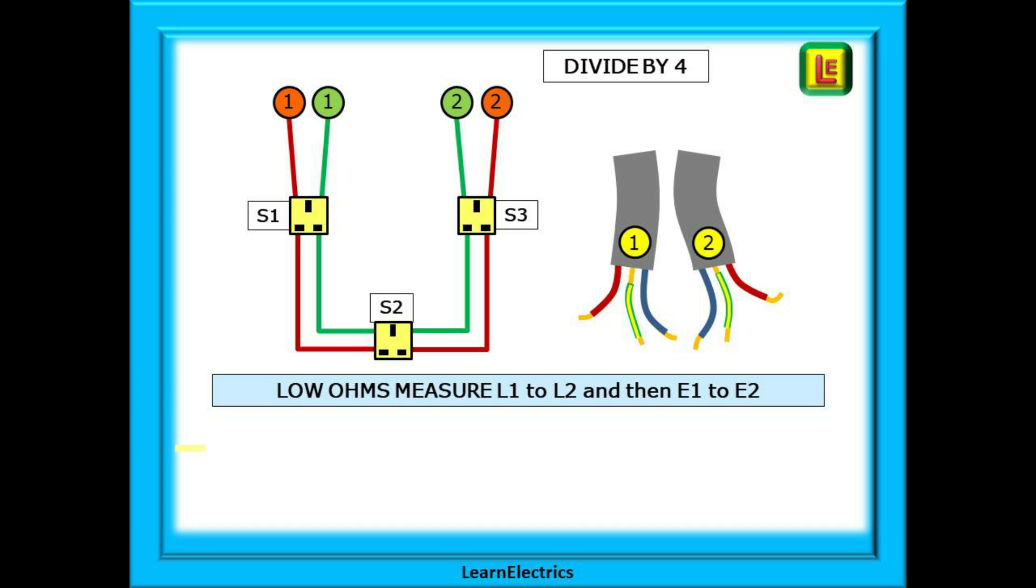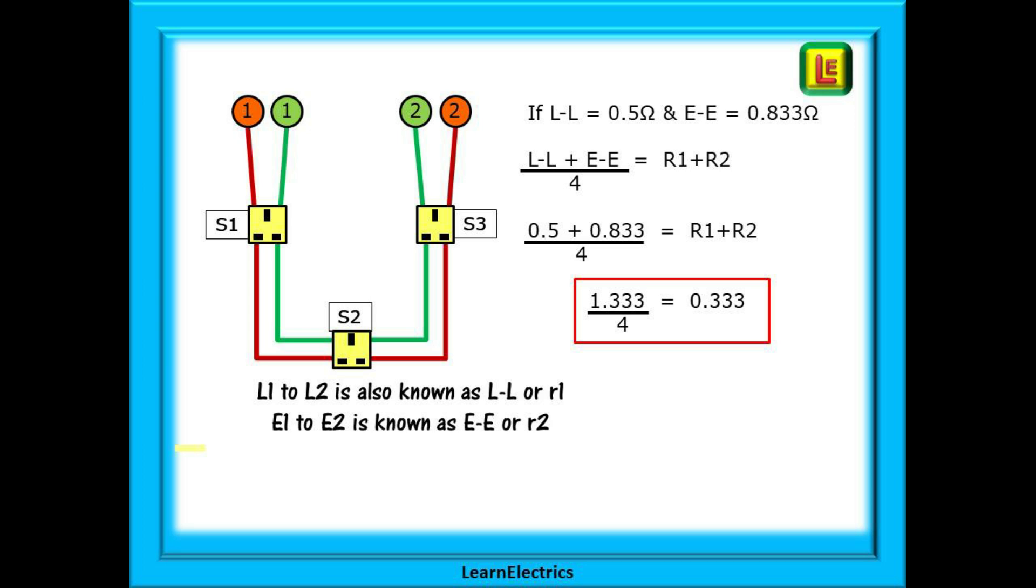Then we can measure the earth or CPC end to end, again called EE or E1 to E2 or little R2. This is the resistance of just the length of the line conductor and then just the length of the CPC. We've made up some numbers. We've said that LL measures 0.5 ohms and EE measures 0.833 ohms. Now we can add LL to EE and divide by 4. So 1.333 divided by 4 is 0.333 ohms. This is R1 plus R2 and this is the figure to put on the test schedule.